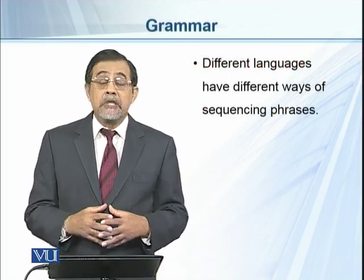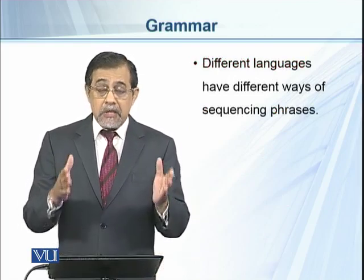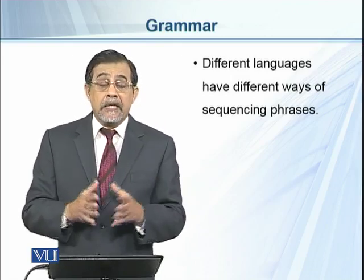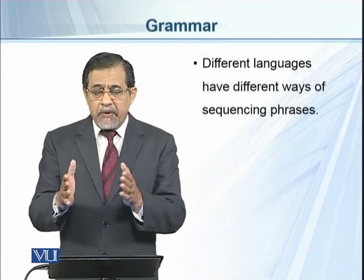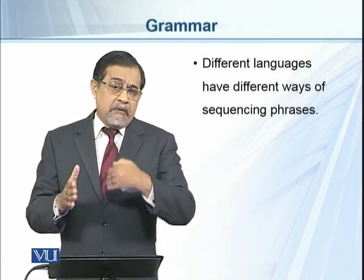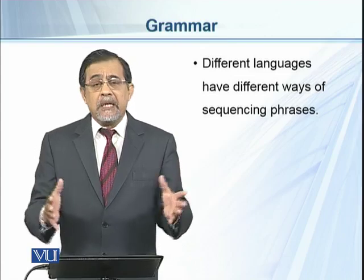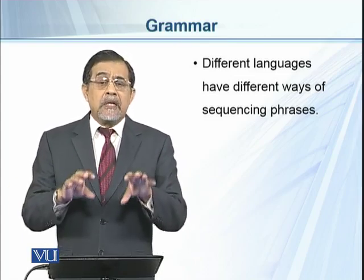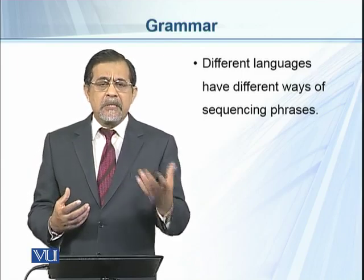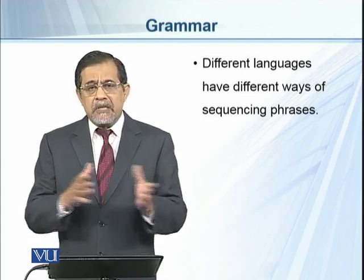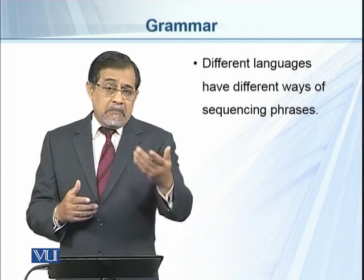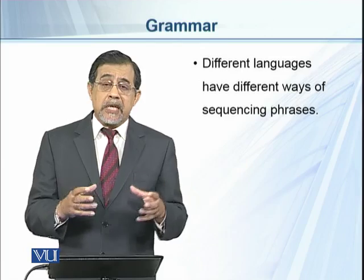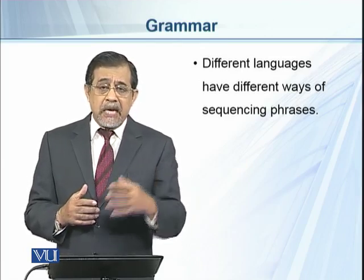Different languages have different ways of sequencing phrases, clauses, and sentences. For example, if we try to translate a sentence from English into Urdu, the arrangement of words is different. Similarly, across different languages, the sequencing of words varies. However, there are some similarities — in any phrase, there may be similar sequencing such as adjective plus noun or noun plus adjective. Through grammar, we understand how to construct sentences and sequence words into phrases and clauses.